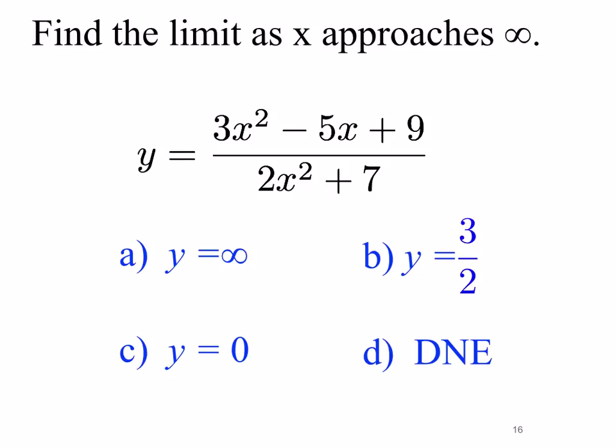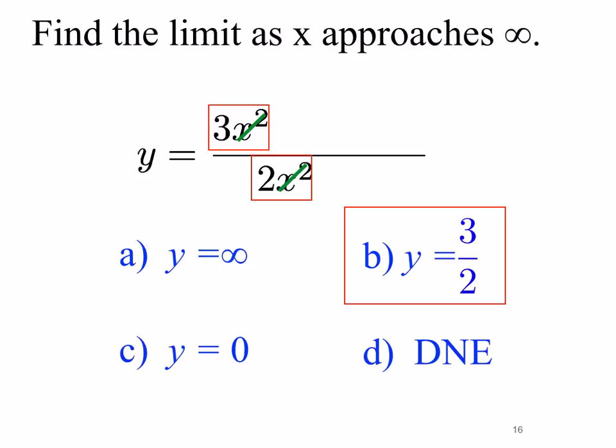We're asked to find the limit as x approaches infinity of y equals 3x squared minus 5x plus 9 divided by 2x squared plus 7. This is clearly a rational expression. We consider only the highest power in the numerator and denominator — 3x squared and 2x squared respectively. The x squares cancel, and we're left with 3 over 2. So the limit as x approaches infinity is 3 halves, and there is a horizontal asymptote at y equals 3/2.